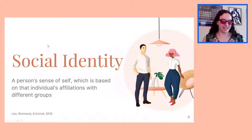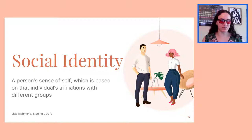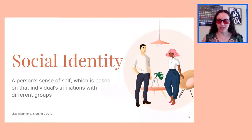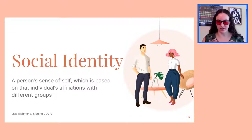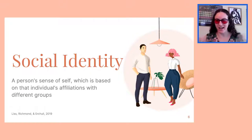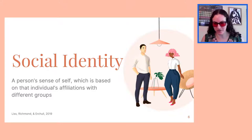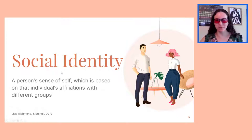Your social identity is your sense of self, and oftentimes that sense of self is based on your affiliations with different groups. For this presentation we're focusing on demographic-type variables, but your social identity could also be something like sports fandom — for example, supporting the New York Giants. So your social identity, your sense of self, is typically based on your affiliations with different groups.